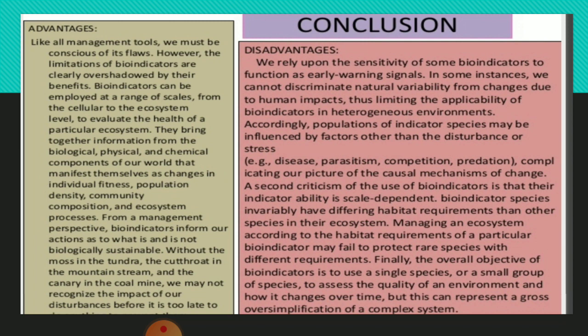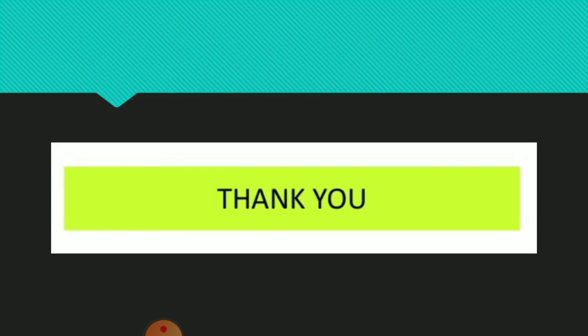Conclusion: There are advantages and disadvantages to using bio-indicators. The limitations of bio-indicators are clearly overshadowed by their benefits. Students should go through the concluding slide to study the advantages and disadvantages in detail. This completes the topic of plant indicators and bio-indicators. Detailed text in the slides can be read patiently, and notes can be made in Hindi as the content has been translated and explained in Hindi. Thank you.